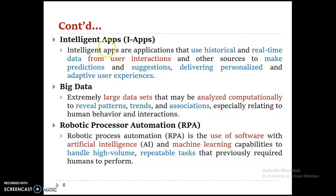The next one is Big Data — if we access an extremely large data set, we call it big data. Robotic Process Automation is the use of machine learning and artificial intelligence to handle high-volume data in repeatable tasks, where the system performs actions again and again automatically.